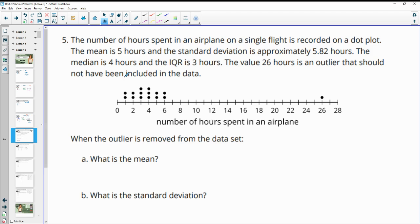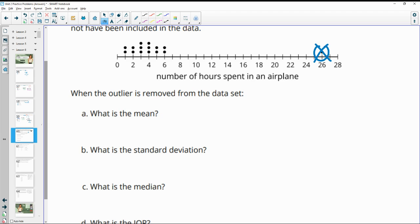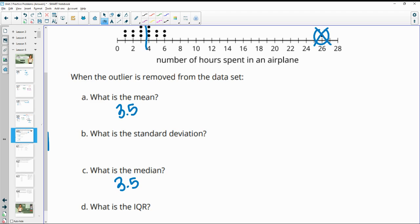Number 5, the number of hours spent in an airplane on a single flight is recorded on a dot plot. The mean is 5 hours and the standard deviation is approximately 5.82 hours. The median is 4 hours and the IQR is 3 hours. The value 26 is an outlier that should not have been included in the data. So this number way out here should not have been included. So it's asking you the mean, which now that you removed this, this data is symmetric. So the mean is going to be right in the middle. So it's right in between 3 and 4, meaning that that's going to be 3.5. And that means the mean is going to be 3.5 as well. Or sorry, the median.